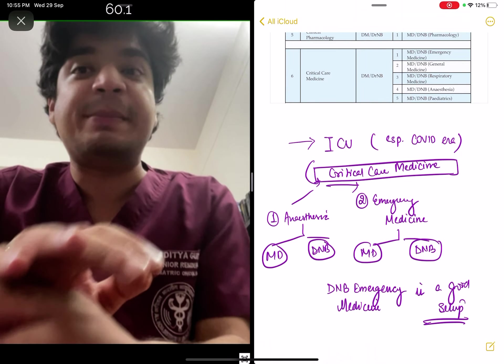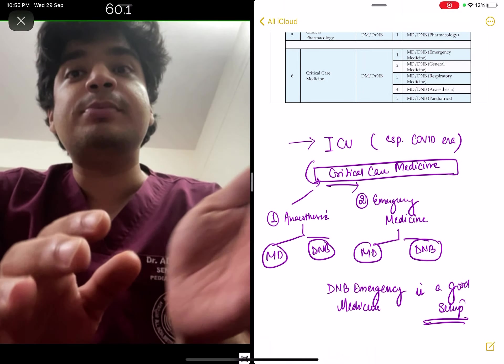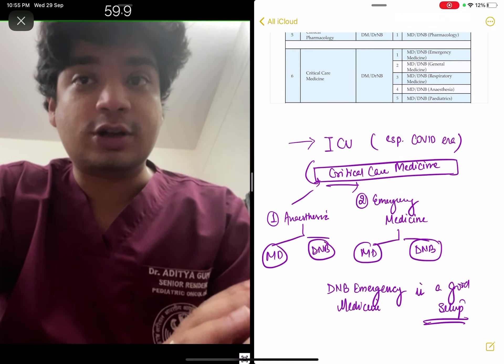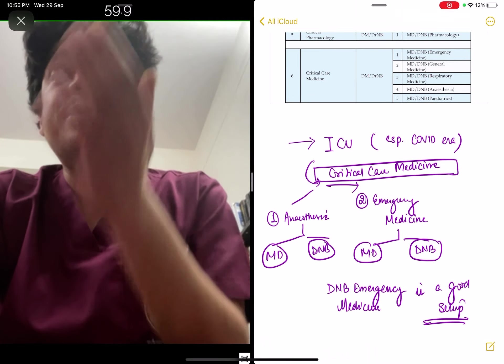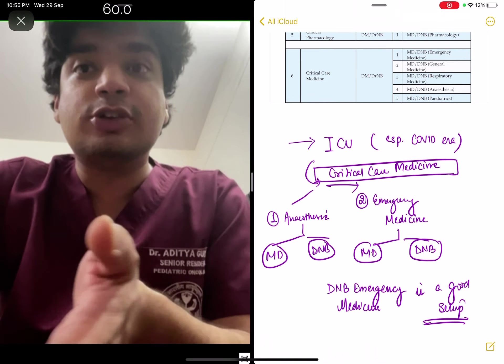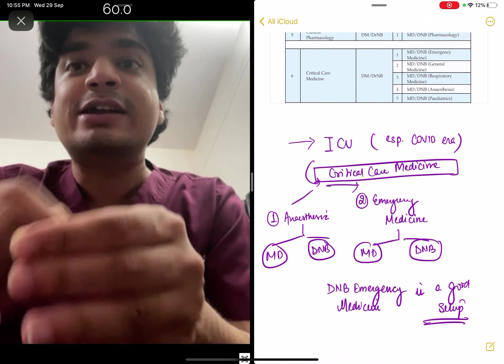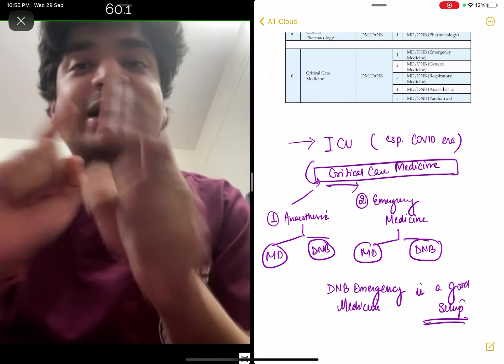DNB in emergency medicine is very up and coming, and a simple DNB in emergency medicine can manage the emergencies of a very good private or government sector hospital. They will require faculty as well, so your prospect of getting a government faculty seat also improves a lot.